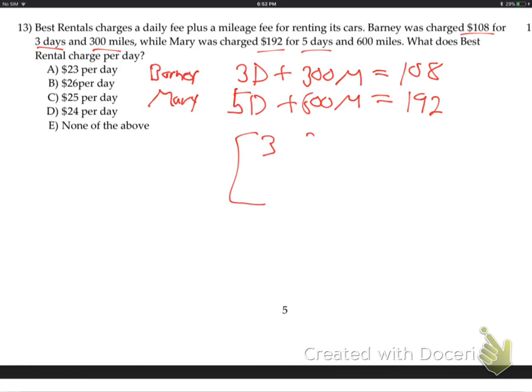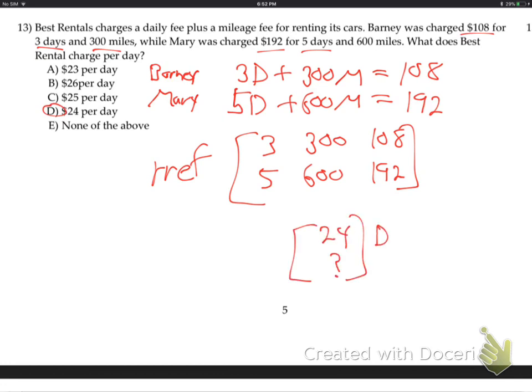Make your matrix, 3, 300, 108, 5, 600, 192, RREF. You'll get answer D. Your answer will come out 24 and I don't know what. D's the top one because D came first and then M. So the days are, it's $24 per day for the rental car and that's what they want.